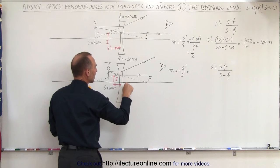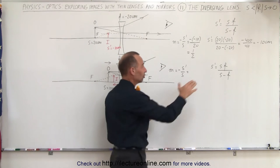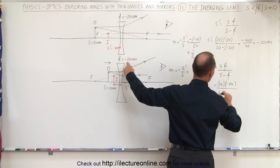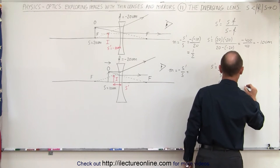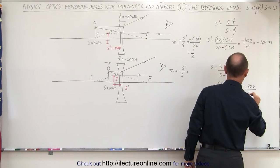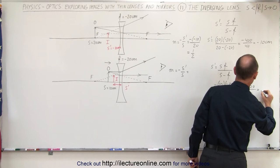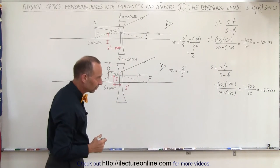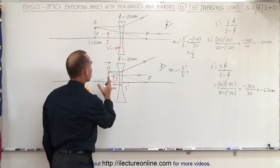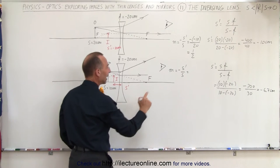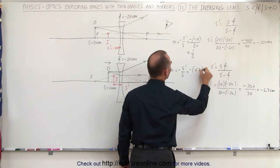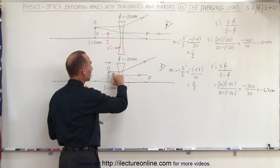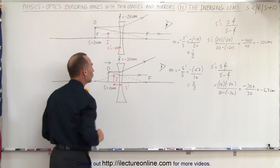There's the image, and this should be the image distance S prime. We can calculate the image distance using the equation: S prime equals S times f divided by S minus f, which equals 10 times minus 20 divided by 10 minus minus 20, which equals minus 200 divided by positive 30, which equals minus 6.7 centimeters. That puts the image at about one-third the distance from the lens to the focal point, and the magnification equals minus minus 6.7 divided by 10, which equals positive two-thirds. So the image is two-thirds the size of the object.